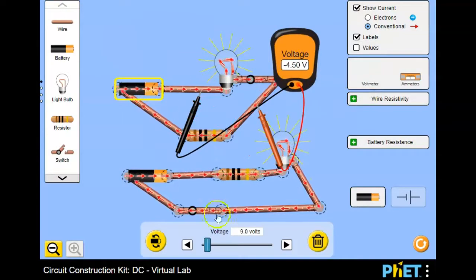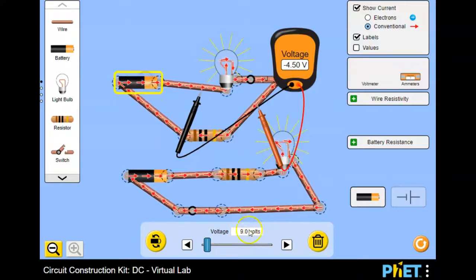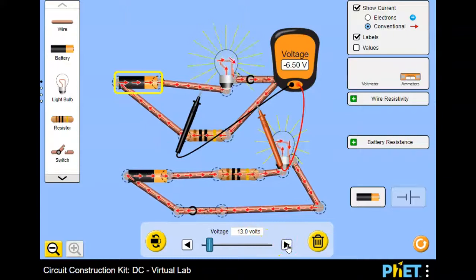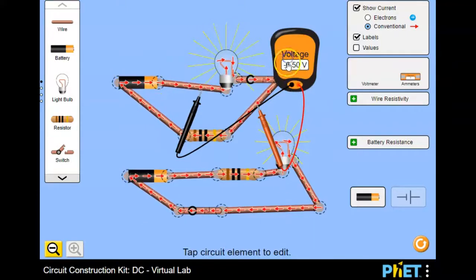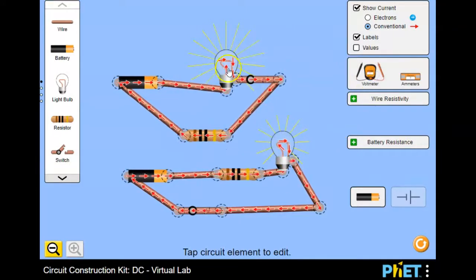You can also click on the components and change their values. So if I wanted this battery to be higher than 9 volts, I would click on this right arrow and increase the voltage. Let's get rid of this and put that back.